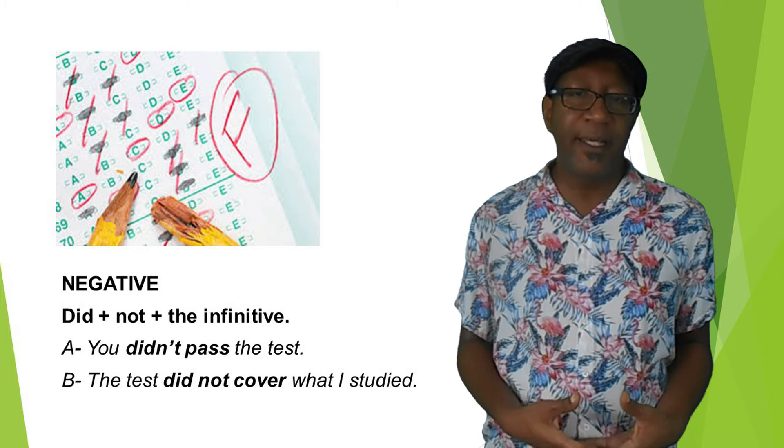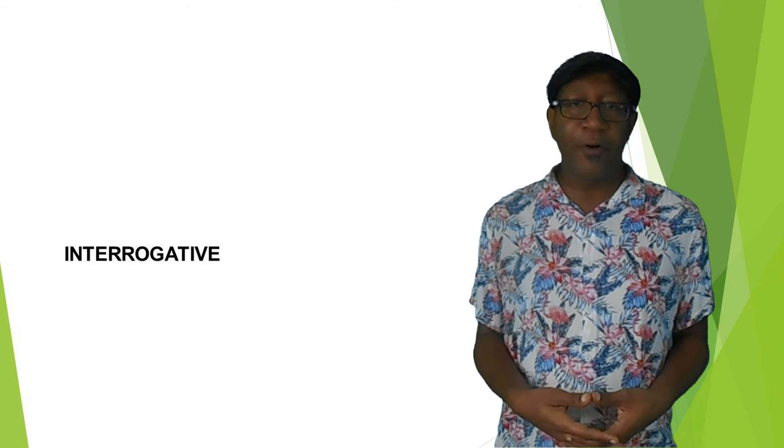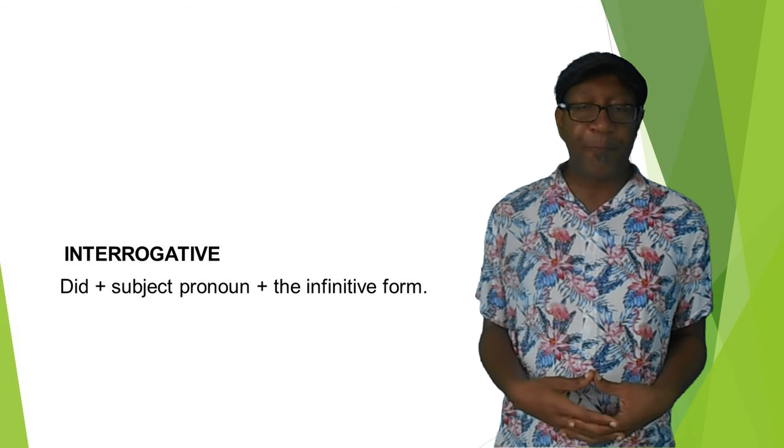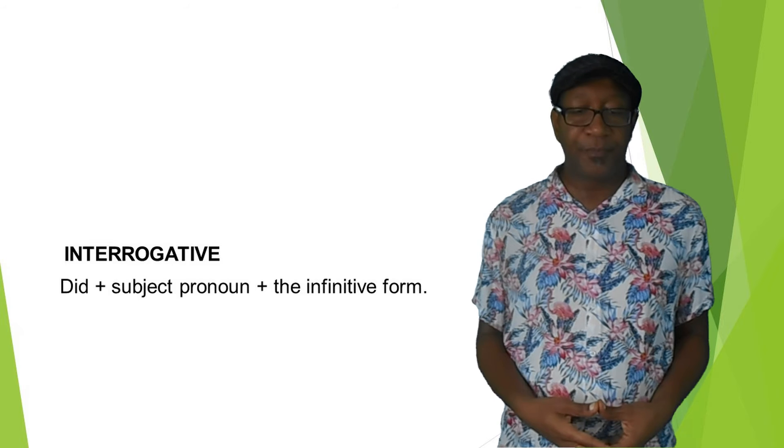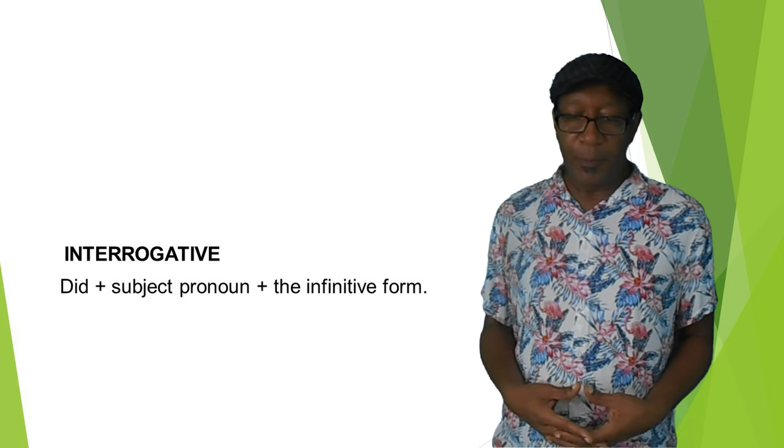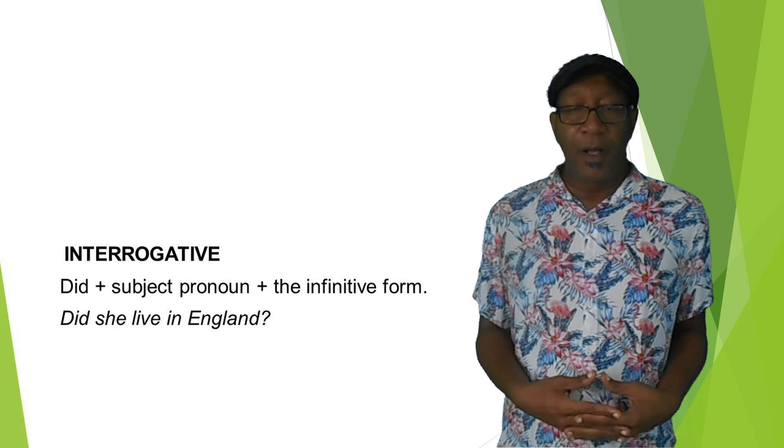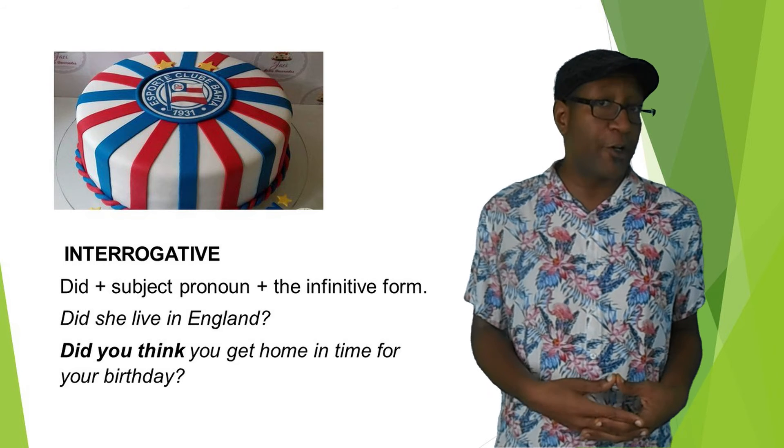Now talking about interrogative, it is also the same for regular and irregular verbs and the structure is DID, the auxiliary verb, plus the subject pronoun plus the infinitive form. And here we have an example: did she live in England? And the other one: did you think you get home in time for your birthday?